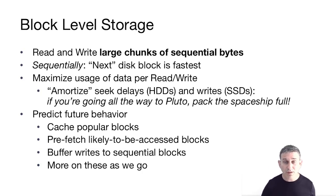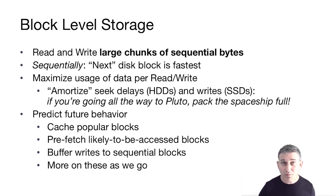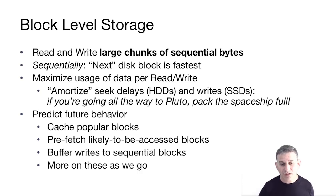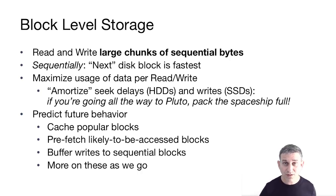Some ways we accomplish this: we predict future behavior. We keep blocks in memory if we think they'll be popular — that's called caching. We might even prefetch blocks from disk because we think they'll be accessed soon, getting them into memory before they're even requested — that's called prefetching. And with writes, we can buffer them: when you say you'd like to write page 4, we hold it in a memory buffer, and then when you've also written pages 5 and 6, we write them all together as sequential writes. We'll talk about caching, prefetching, and buffering more as we go through the lectures.